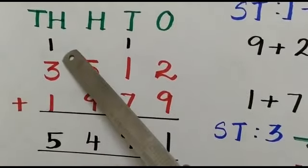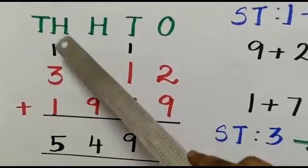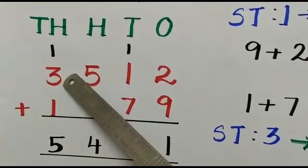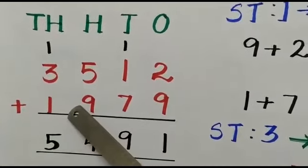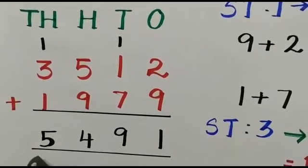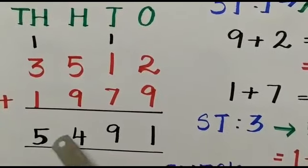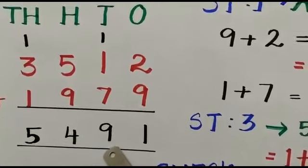Finally, we will add the digits in the thousands column. 1 plus 3 is equal to 4. 4 plus 1 is equal to 5. So the final answer is 5,491.